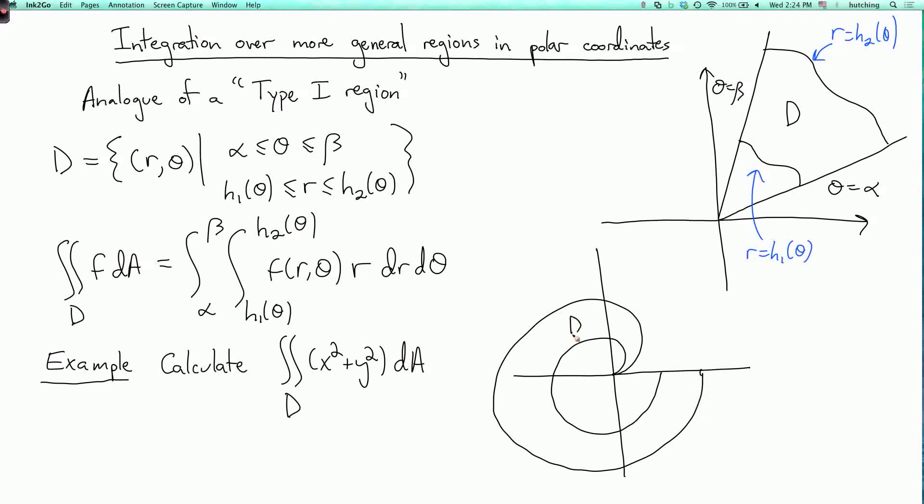So this is D. This outer curve is r equals 2 theta, and the inner curve is r equals theta. So this is an example of one of these regions, where here alpha equals 0 and beta equals 2 pi, because we're just going once around from 0 to 2 pi, and h1 of theta equals theta, and h2 of theta equals 2 theta.